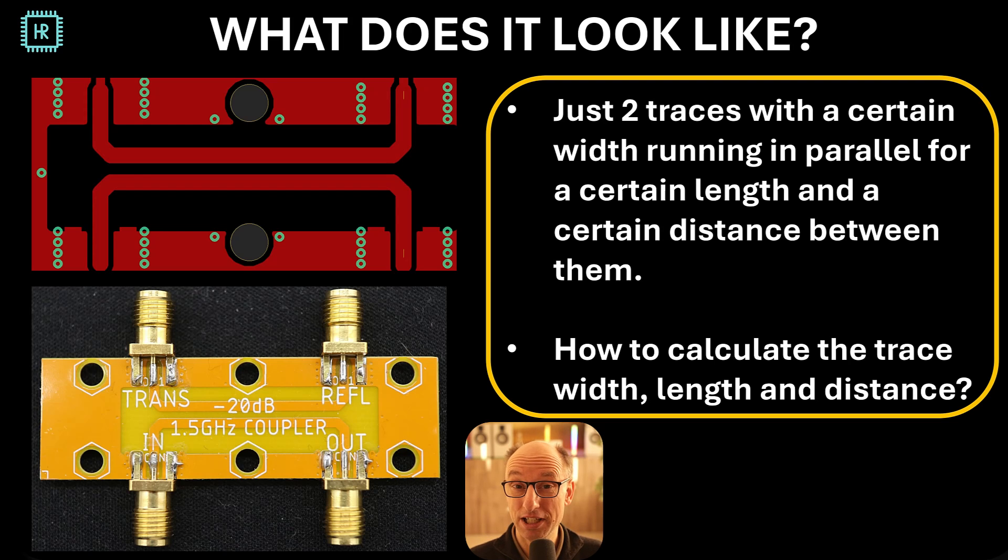So it sounds like a pretty magical component because it can make the difference between signals moving one way and the other way. Actually in practice these things look extremely simple. On the left top we see the PCB design of the coupler we're looking at in this presentation. It's just two lines, two transmission lines. There's a ground plane below this and all you have to do is make two lines that run along each other over a certain distance with a specific distance between the lines. And that's all there is to it.